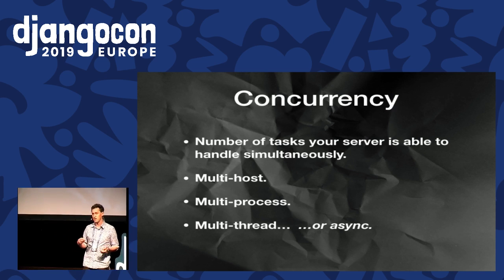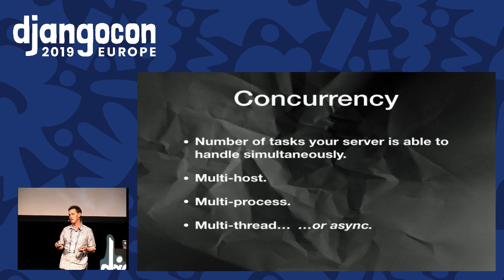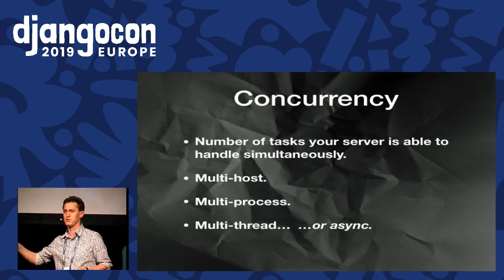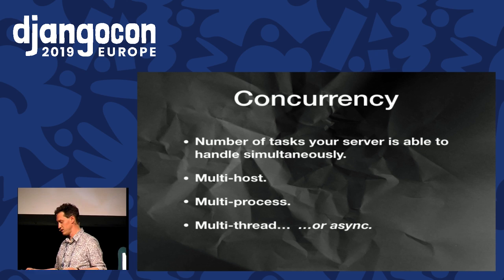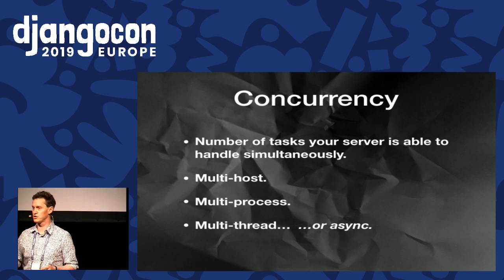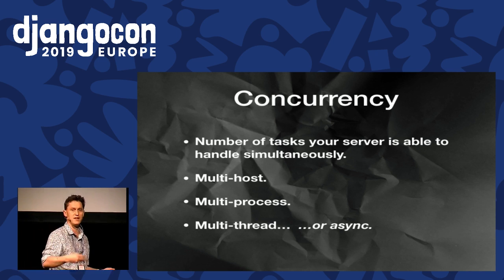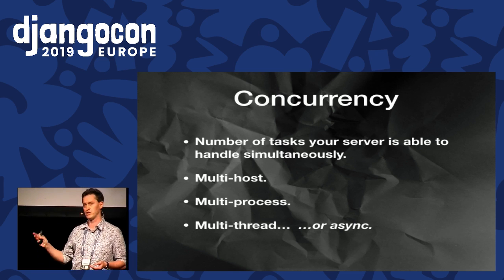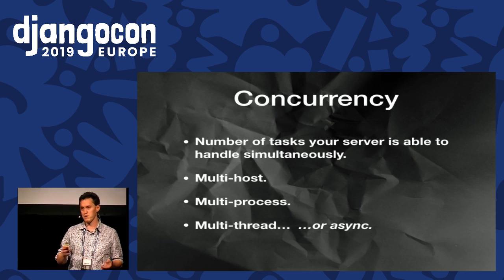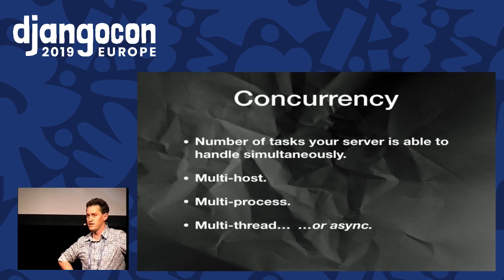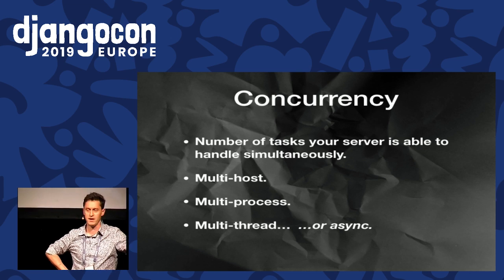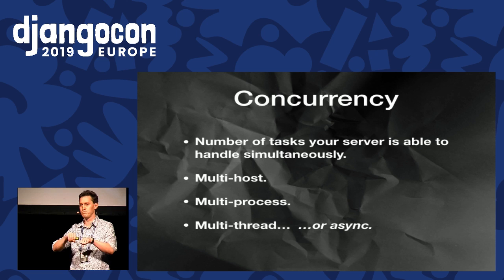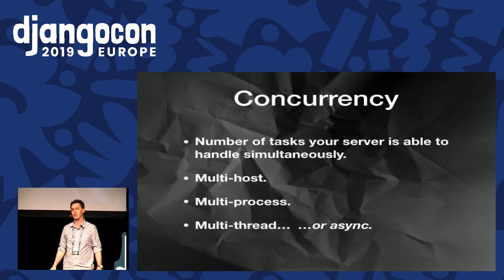Before we dive in, a little groundwork. Concurrency is all about the number of tasks your server is able to handle simultaneously. In web development, this maps onto how many HTTP connections your server can hold open at the same time, and in turn influences throughput — how many requests per second each server can handle. The bluntest hammer in our toolbox is multi-host horizontal scaling, where you add more servers running the same codebase to handle a greater number of requests per second.